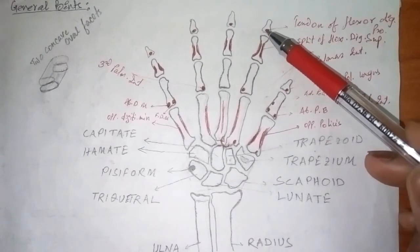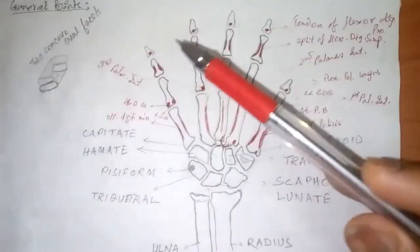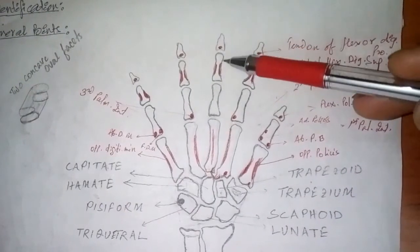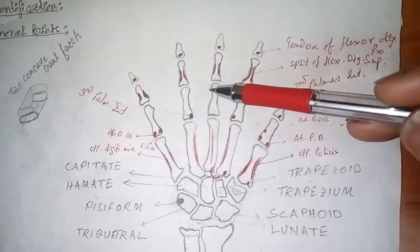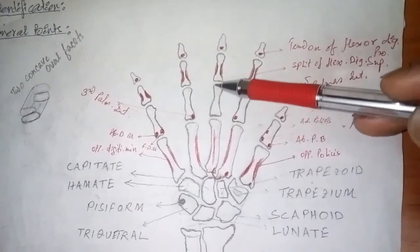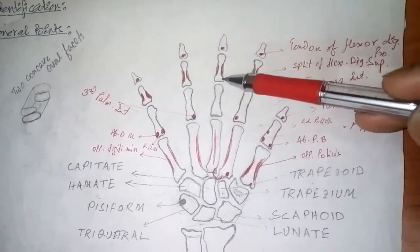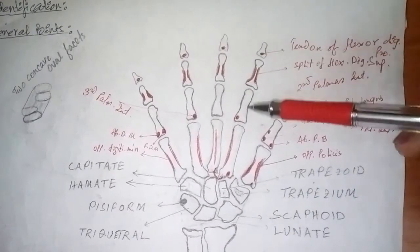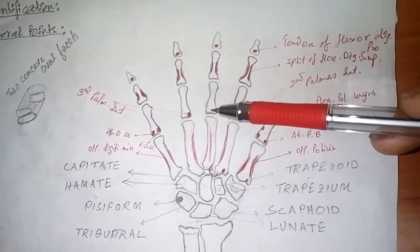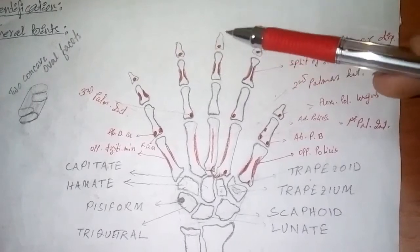The tendons of flexor digitorum profundus are also inserted on the remaining three digits. On the third digit we clearly see that the proximal phalanx on the palmar surface has no muscle insertion. But on the middle phalanx and on the distal phalanx, the same attachments as in the second digit apply — the flexor digitorum profundus and the flexor digitorum superficialis are inserted here.